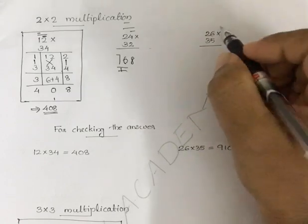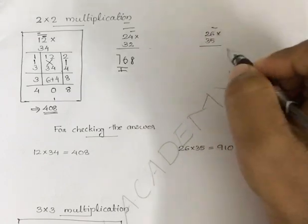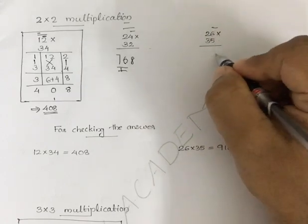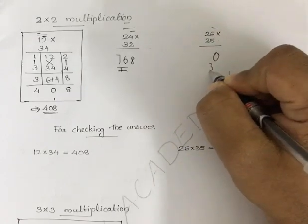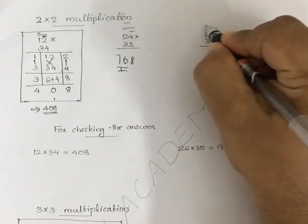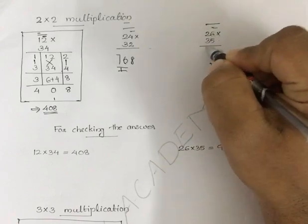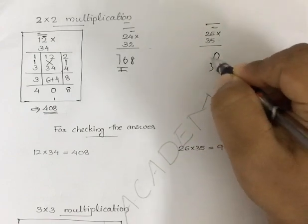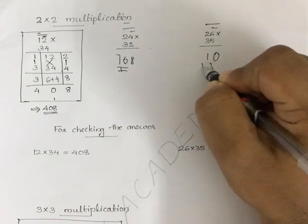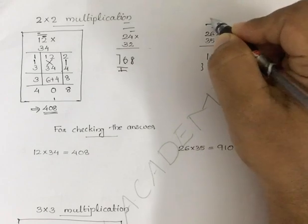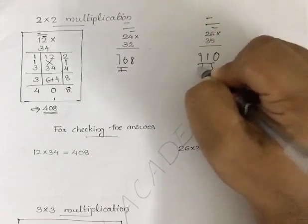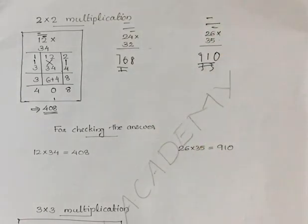For 26 into 35: 6 times 5 is 30 — write 0, carry 3. Next, 2 times 5 plus 6 times 3 is 10 plus 18 equals 28, plus carry 3 is 31 — write 1, carry 3. Last, 2 times 3 is 6 plus carry 3 is 9. So the answer is 910.